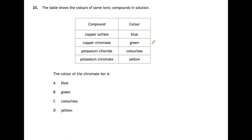Question twenty: the table shows some colours of ionic compounds in solution. You're to work out the colour of the chromate ion. So we've got copper sulfate, which is blue. We have copper chromate, which is green. Potassium chloride, which is colourless. And potassium chromate, which is yellow. So we have here potassium chromate is chromate, which is given the yellow. And you know the chromate is given the yellow, not the potassium, because potassium chloride was colourless. Which means the answer is D, yellow.